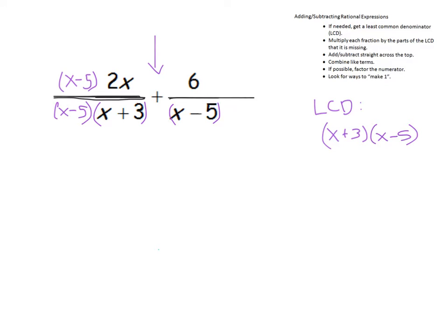Now we're going to do the same thing to the other fraction. We have an x minus 5, but we do not have the x plus 3. So we need to multiply by x plus 3. And if I multiply the denominator of a fraction, I need to also multiply the numerator of the fraction so that I haven't changed its value. So the next step says add or subtract straight across the top. I'm actually going to add one little thing in between here: I would next distribute in the numerators if needed, which we do need to do. We have a binomial factor times a monomial factor, so we're going to want to distribute the 2x to each part of the binomial, and we're going to want to distribute the 6 as well.